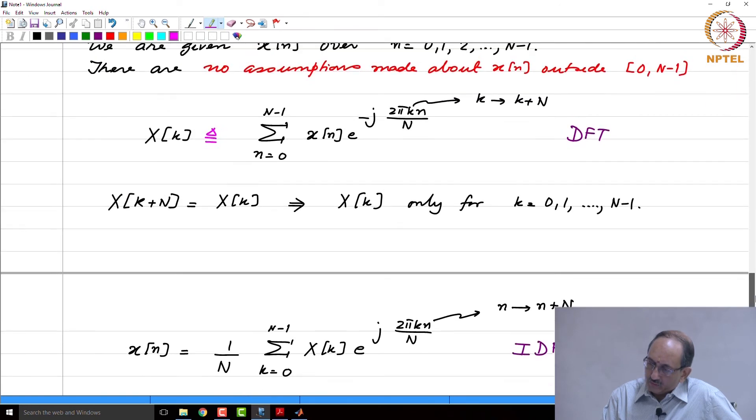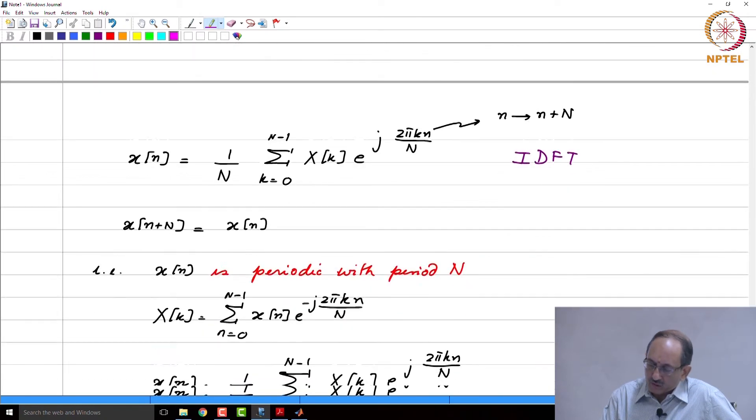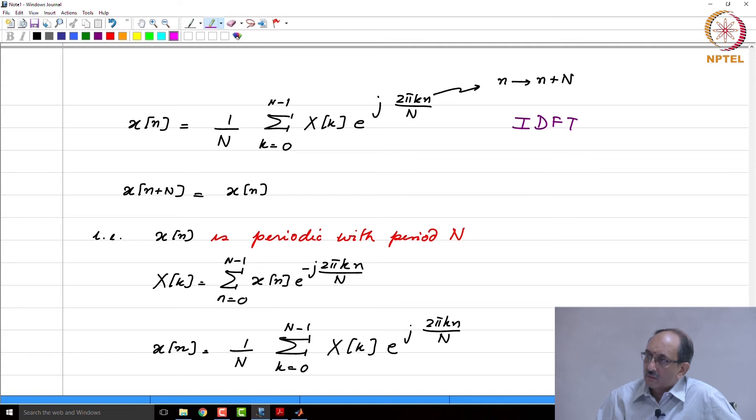So one thing that is clear is given a sequence which has N values. N point sequence gives you a transform that is also N points. N point sequence gives you N point transform.